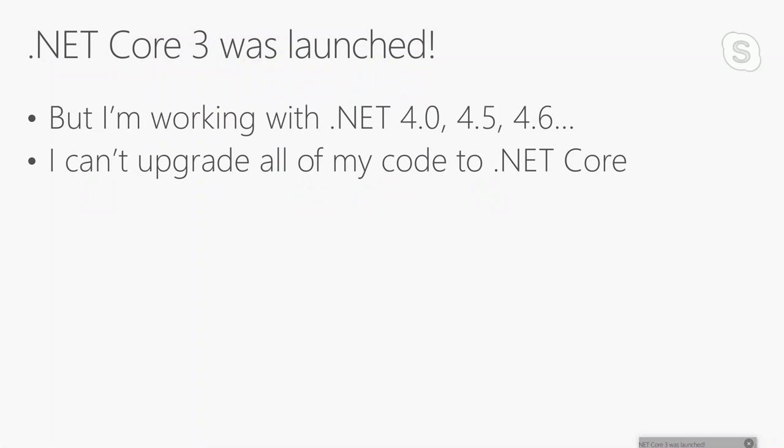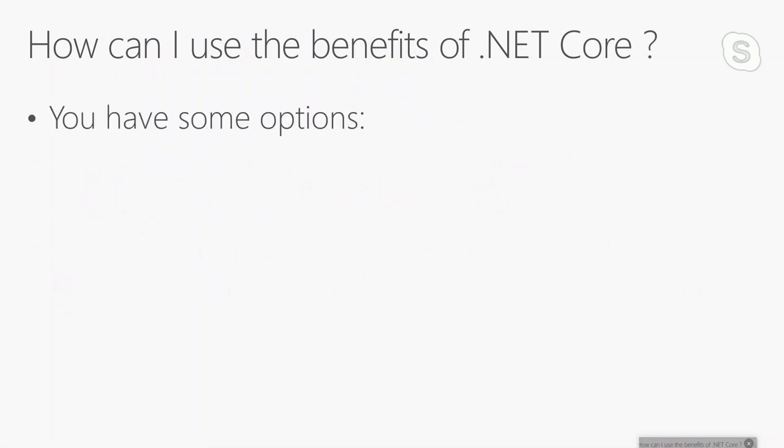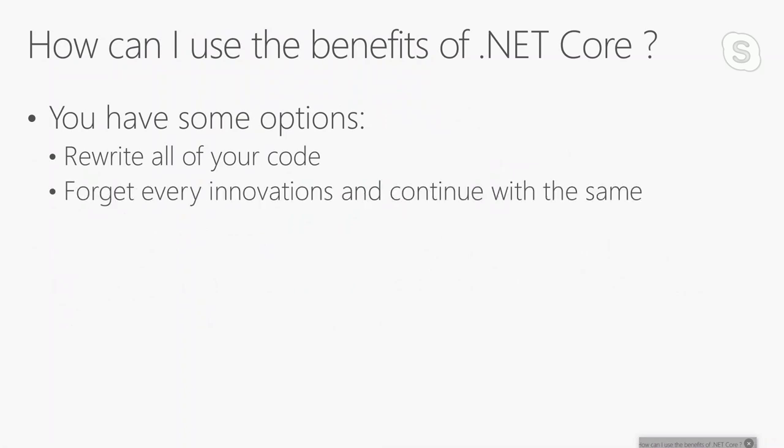But if you're working with .NET 4, 4.5, or 4.6 and you can't upgrade all of your code to .NET Core, and you have many dependencies — I already ran the .NET Portability Analyzer and there are many parts of my code that are incompatible with .NET Core — I have a problem. How can I use the benefits of .NET Core?